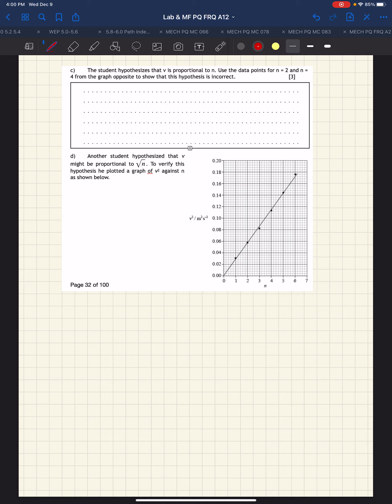In this next part, we're looking to find the relationship. The student hypothesizes that v is proportional to n, so that means v equals kn. Algebraically, if we solve for k, that means k is v over n, and k is a constant. So that means the ratio of v to n should remain constant.